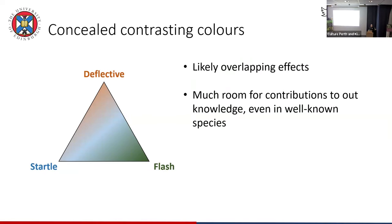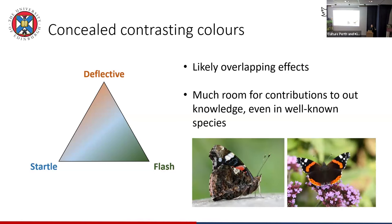You can see how each one of these could be operating in the same system — there are overlapping effects. Trying to disentangle these different explanations, there's a lot of room for contributions to science. The literature is quite vague and definitions are often very blurred. For example, there's actually very little literature on a really common species like the red admiral — trying to work out whether it's aposematic, whether it's distasteful. There's lots of scope for contributions by enthusiasts.